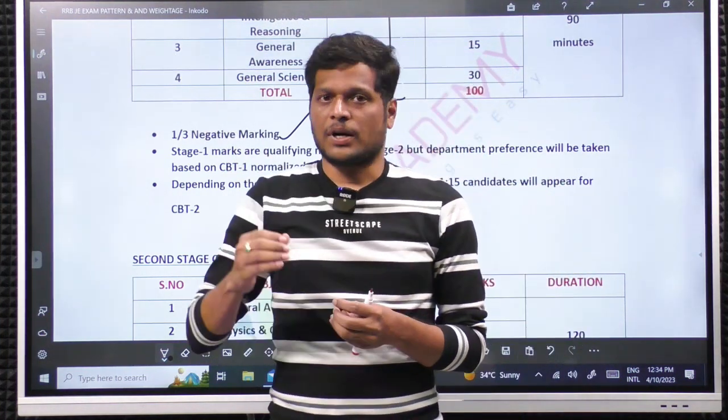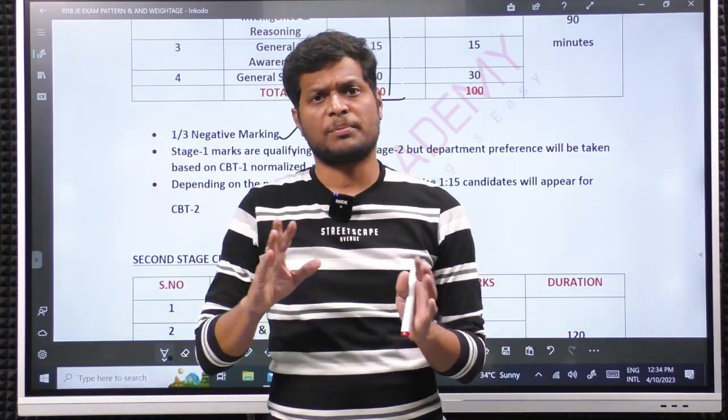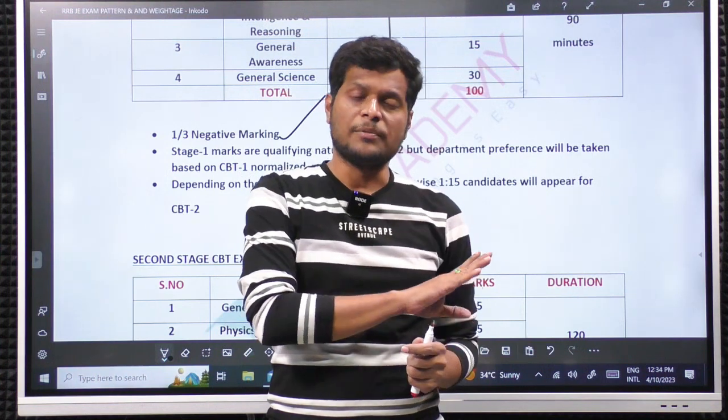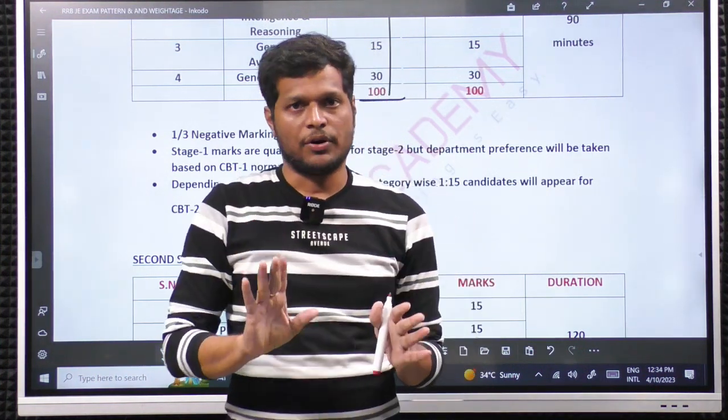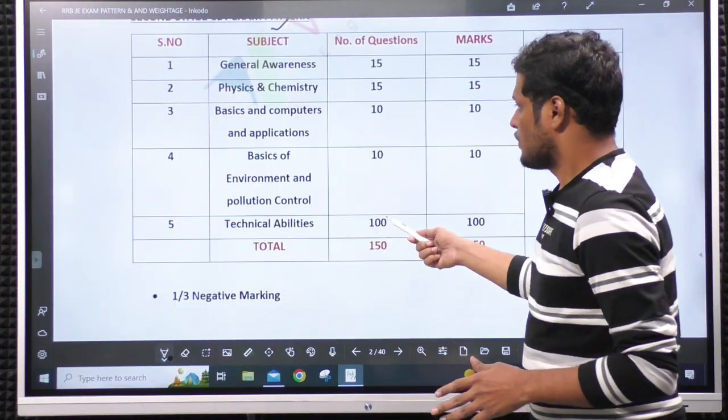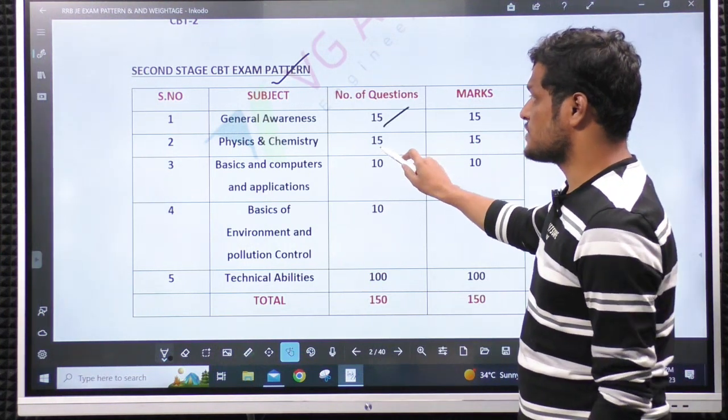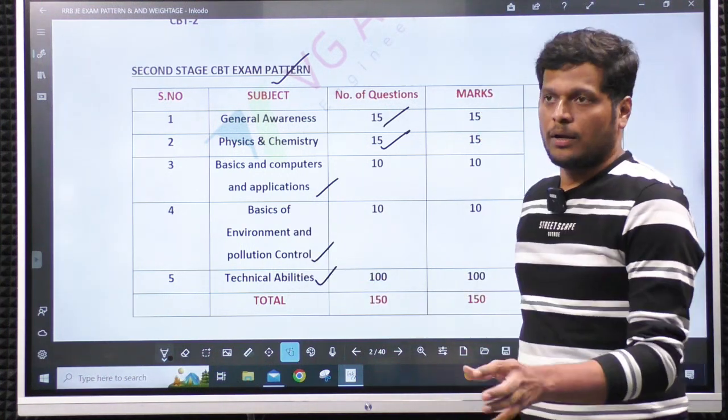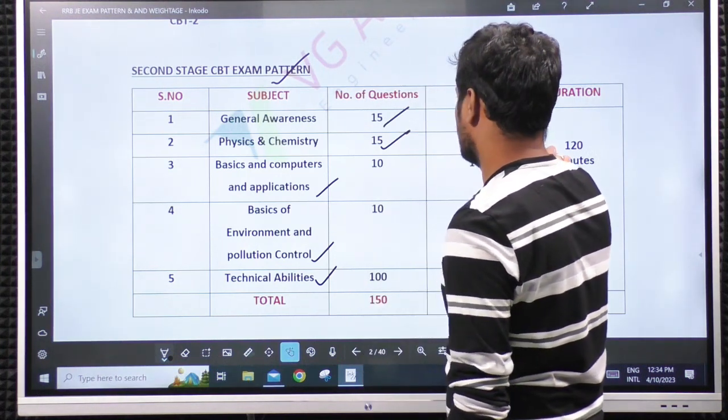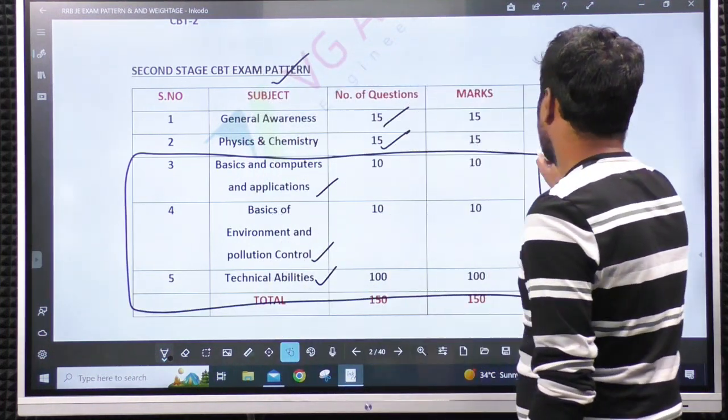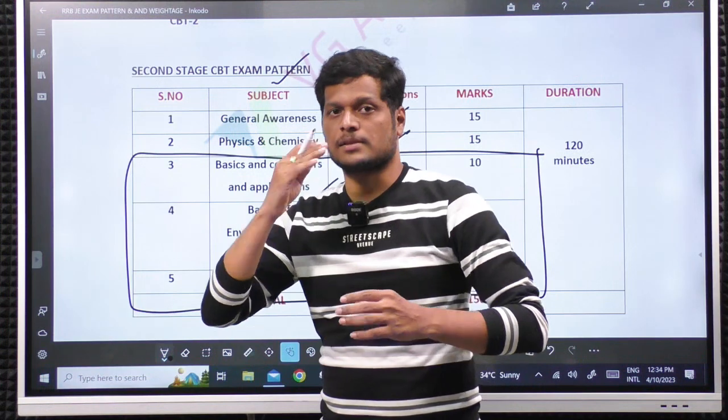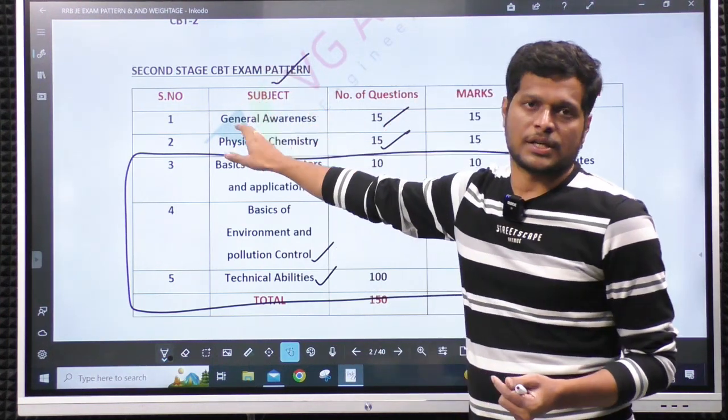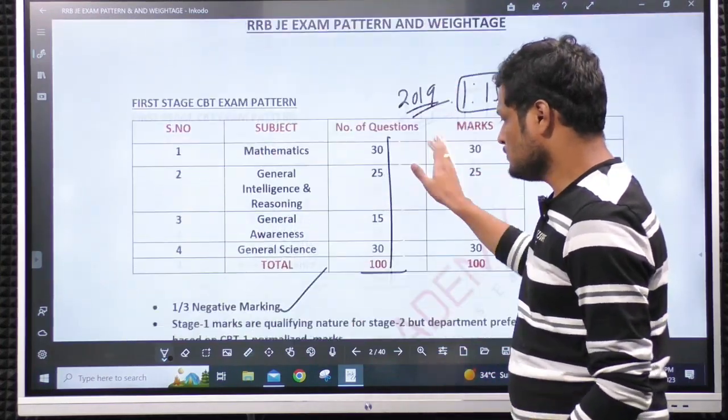You are free to write from any railway zone. As it is from central government, you can write from your state or other state based on the cutoff mark. Whatever the PDF I am showing you here, I will share this PDF as well, which includes cutoff pattern, everything. Same as I said, in the telegram group as well as in the video description. Regarding CBT-2, we have general awareness, physics, chemistry, basics of computer application, basics of environmental pollution, and technical abilities. In my course, whatever I am launching today, I will be teaching these subjects for CBT-2. Regarding general studies also, we have a tie-up with Rupa IAS Academy. We will be launching a separate package for CBT-1 as well as the general studies, physics and chemistry, and one-third negative marking.